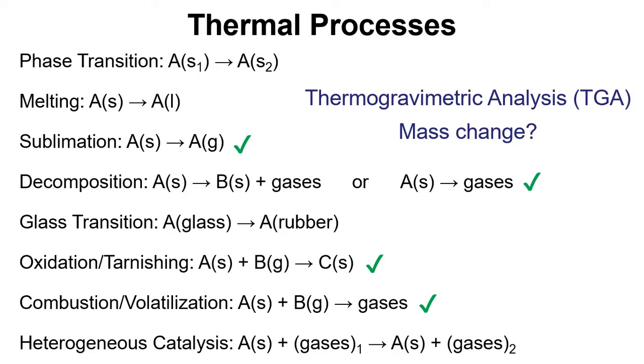So there are these different techniques. We need to think about a match up between the technique and the thermal process that we want to study. So these other processes don't undergo a mass change, and so thermogravimetric analysis wouldn't actually tell you anything about those. So it is important to think about the technique and the property and the thermal process that you're going to study.